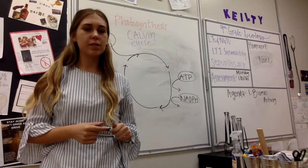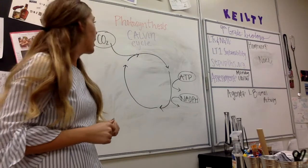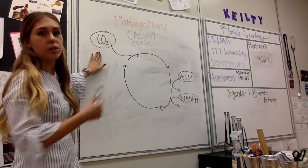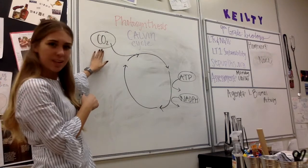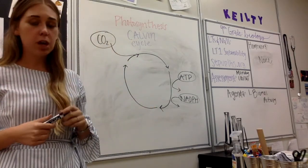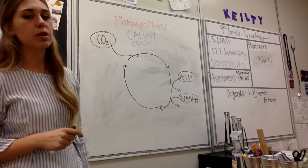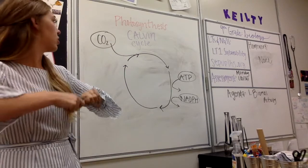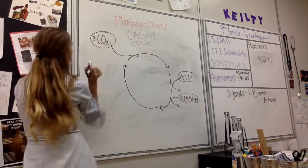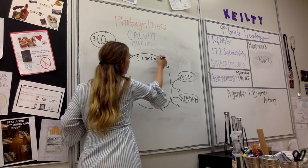Moving on, we have the Calvin cycle, also known as the light-independent reaction, and it used to be called the dark reaction. I've circled our products from our light reaction: ATP and NADPH. Carbon dioxide is one input we have not used yet. The Calvin cycle is extremely complicated, but you don't need to know too much more than what I'm going to put on the board. We have three molecules of carbon dioxide entering into the Calvin cycle. The first step that occurs is carbon fixation.